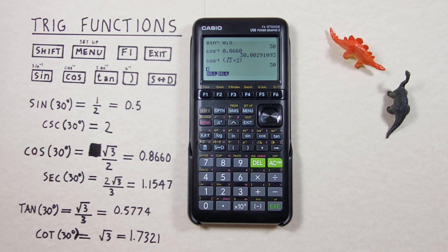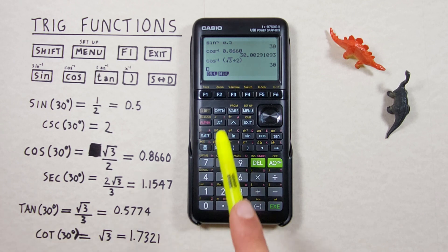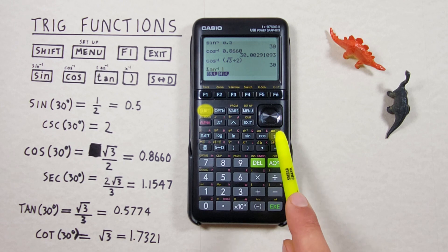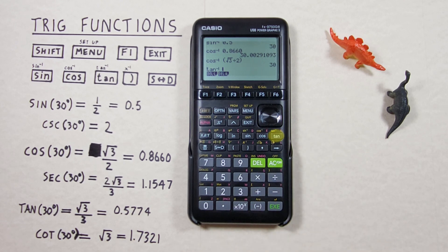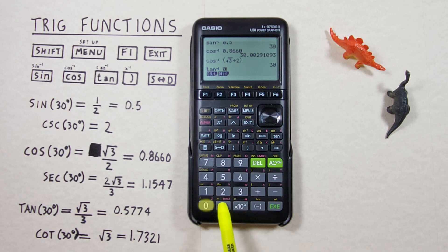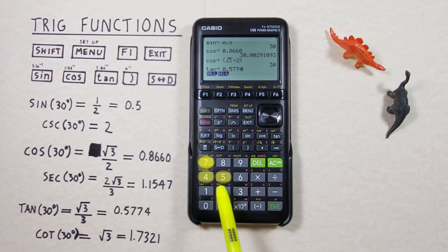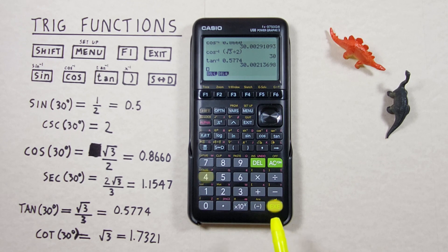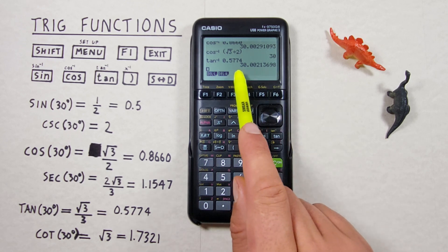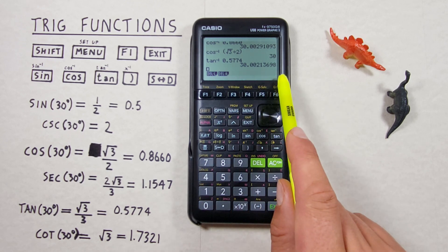For arc tan, again shift and tan, and then we'll use our rounded result of 0.5774. We hit EXE and get a result that would round to 30 degrees.